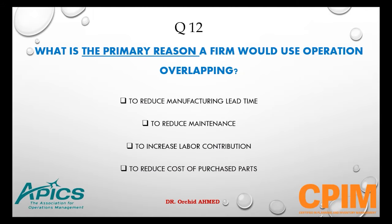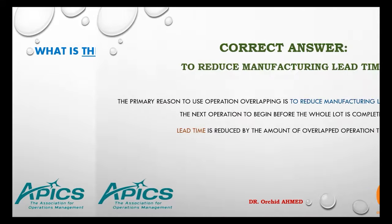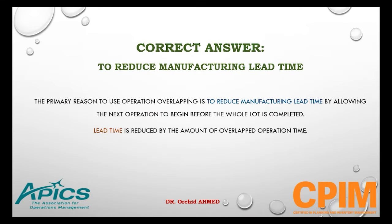Question number 12. What is the primary reason a firm would use operation overlapping? Options: to reduce manufacturing lead time, to reduce maintenance, to increase labor contribution, or to reduce cost of purchased parts. The right answer is to reduce manufacturing lead time. By allowing the next operation to begin before the whole lot is completed, lead time is reduced by the amount of overlapped operation time.